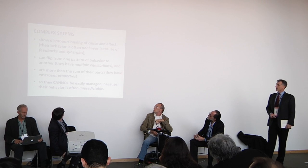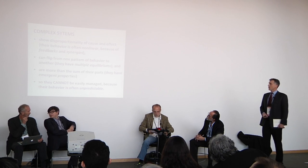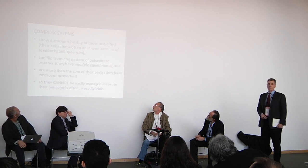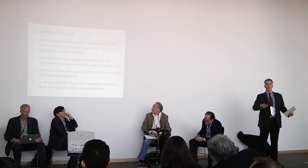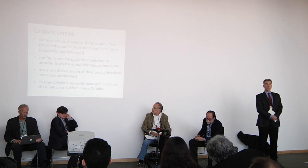Complex systems are different on each one of these points. They show disproportionality of cause and effect — small causes can cause very big effects, and sometimes very big changes in the systems don't cause any effect whatsoever. They can flip from one pattern of behavior to another. They have multiple equilibria, something of great concern to economic theory right now. And they are ultimately more than the sum of their parts — they have emergent properties.